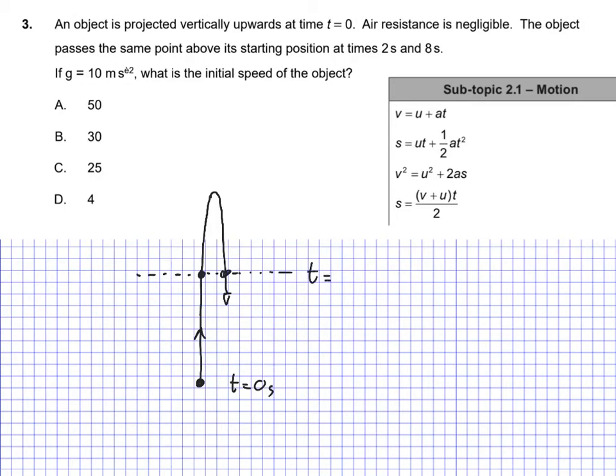And we're told it's passing the same point at two seconds, and at eight seconds. So that means it takes, it passes it at two seconds. So let's go ahead and write some values in here, it's going to take two seconds to go from the starting point to this checkpoint, if you like this dotted line.